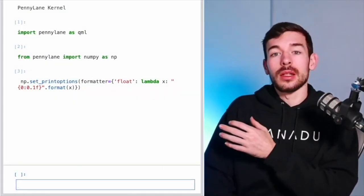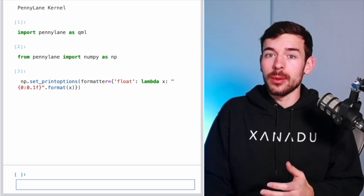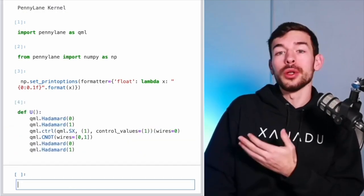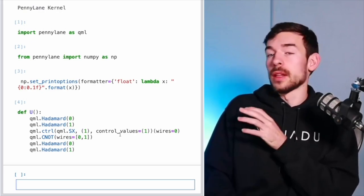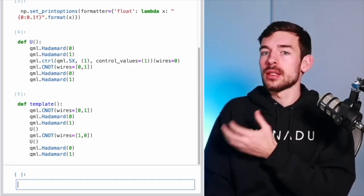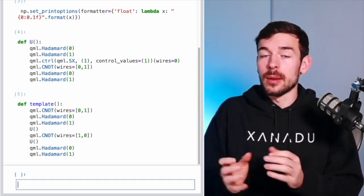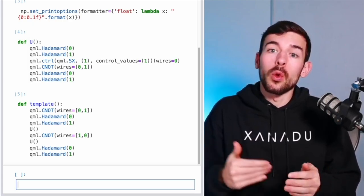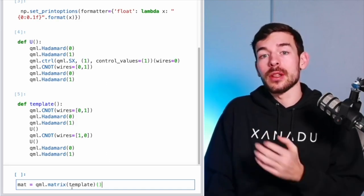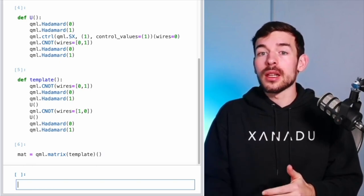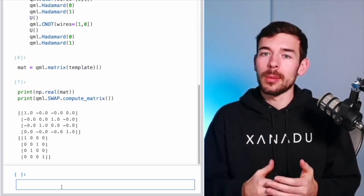Once we already have the value of U, it's very easy to check with PennyLane that actually this is a correct solution. We just have to run this script that we can see here, where first of all we are going to define the different gates of U, and then we are going to use this U definition in the structure of the template in the way that is defined in the statement. So once the template is defined, we just have to ask what is the matrix of this function. So if we apply this final line, when we ask for the matrix, we are going to see that the output is actually the same matrix as the SWAP operator.